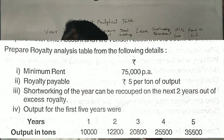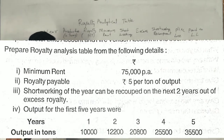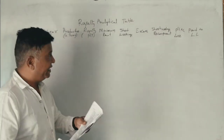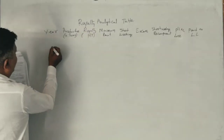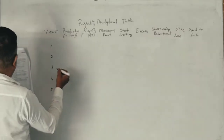Here, students — this is a 2014 question worth 6 marks. Prepare a royalty analysis table from the following details: minimum rent ₹75,000 per annum, royalty payable rupees 5 per ton of output. Short workings of the year can be recouped in the next two years out of excess royalty. Output for the first five years was as follows: 10,000; 12,400; 20,800; 25,500; 35,500 tons.